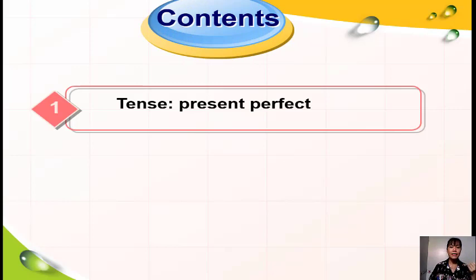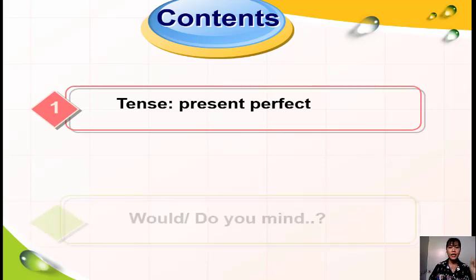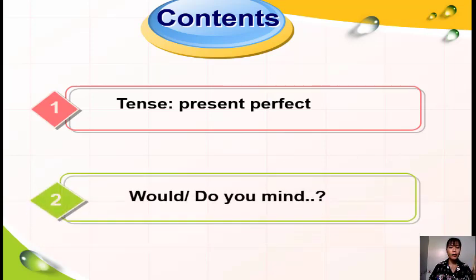Thứ nhất là về thì hiện tại hoàn thành - present perfect tense. Chúng ta sẽ cùng nhau ôn tập lại thì này. Điểm ngữ pháp thứ 2 là câu yêu cầu với 'Would you mind' và 'Do you mind'. Chúng ta sẽ bắt đầu vào điểm ngữ pháp thứ nhất.